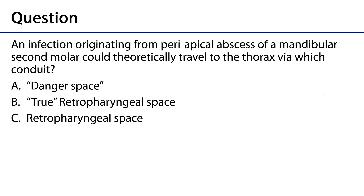Assessment question: An infection originating from a periapical abscess of a mandibular second molar could theoretically travel to the thorax via which conduit — the danger space, the true retropharyngeal space, or the retropharyngeal space? Well, both a and b together: the danger space plus the true retropharyngeal space equals the retropharyngeal space, so a plus b equals c.